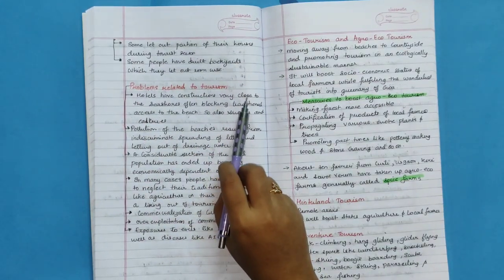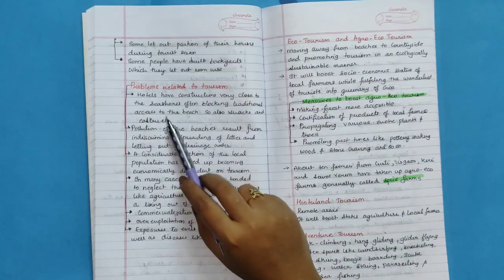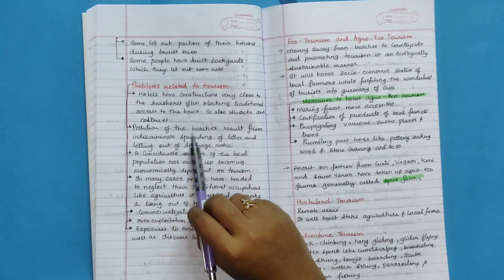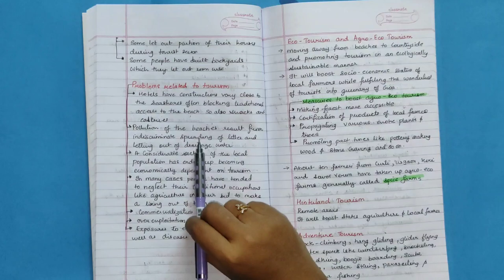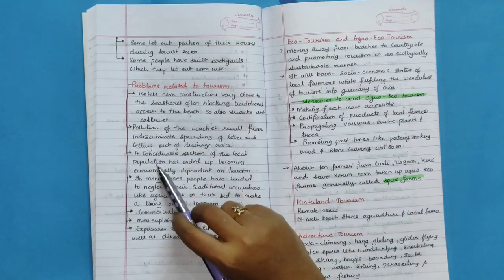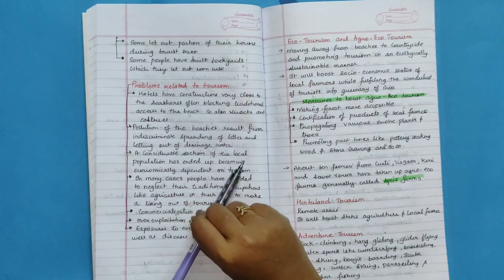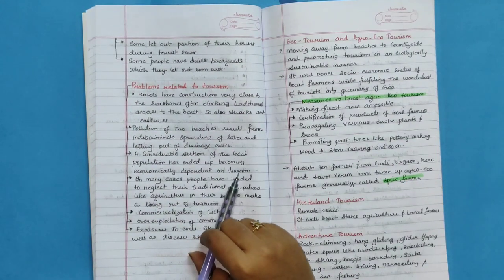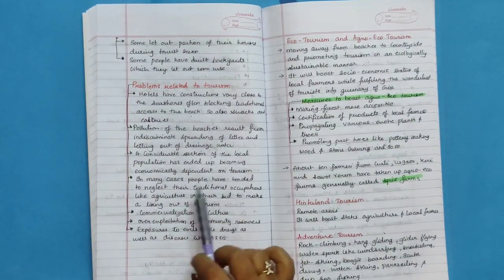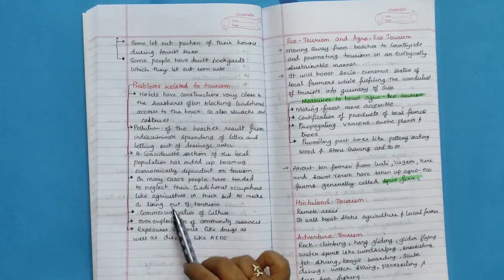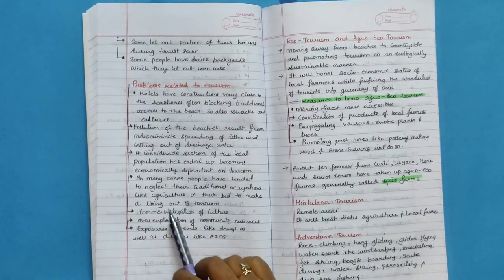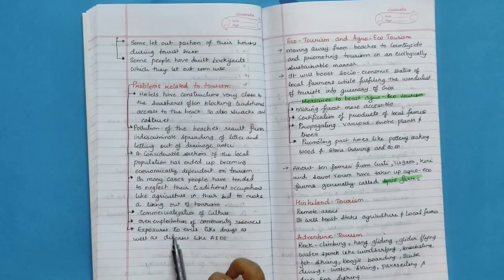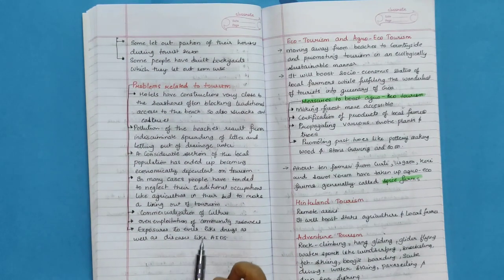Problems related to tourism. Hotels have construction very close to the seashore, often blocking traditional access to the beach. Pollution of the beaches result from indiscriminate spreading of litter and letting out of drainage water. A considerable section of local population has ended up becoming economically dependent on tourism. In many cases, people have tended to neglect their traditional occupation like agriculture in their bid to make a living out of tourism. Commercialization of culture, over-exploitation of community resources, exposure to evils like drugs as well as diseases like AIDS.